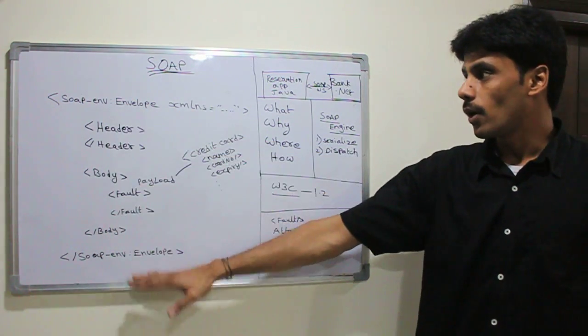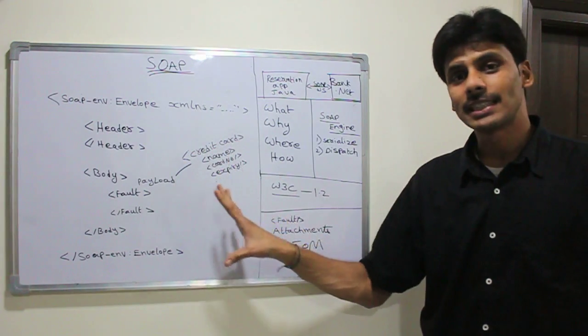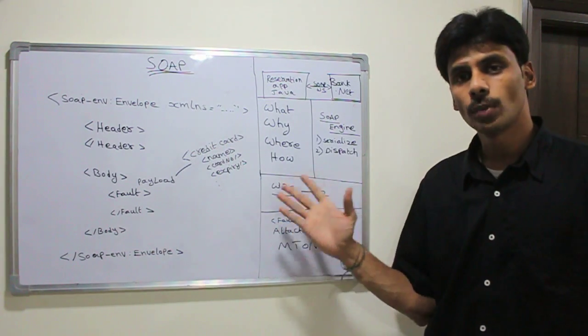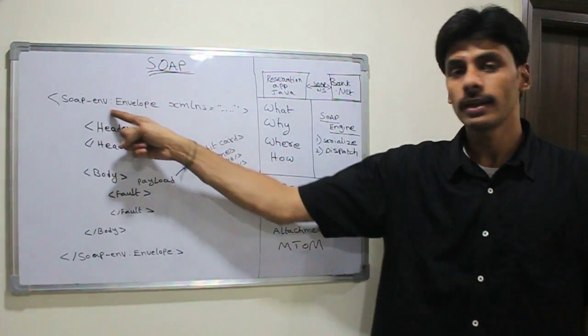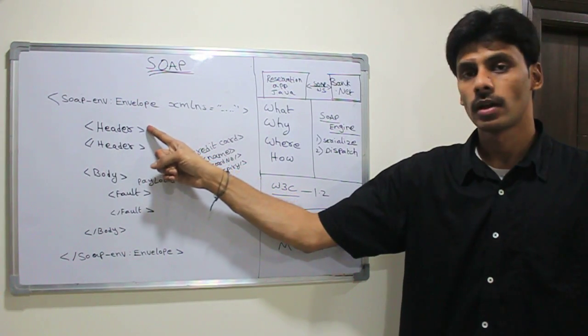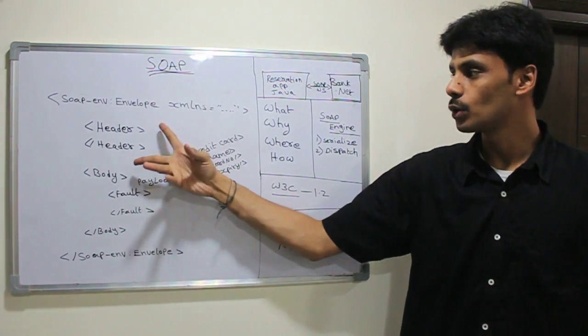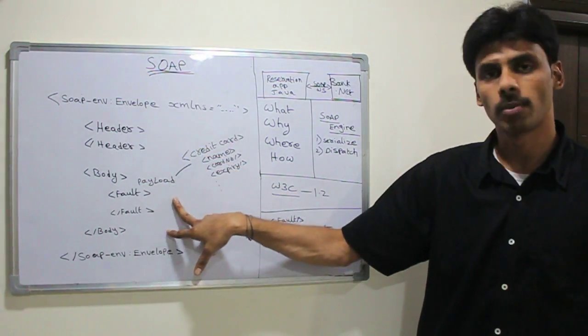Here is the SOAP envelope or most of the famous elements that are defined in the W3C SOAP specification. The root element is SOAP envelope. Within the SOAP envelope, we have two blocks: header block, then the body block.